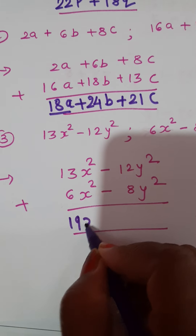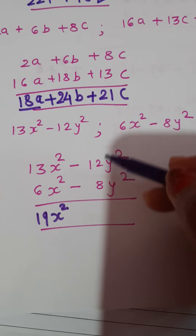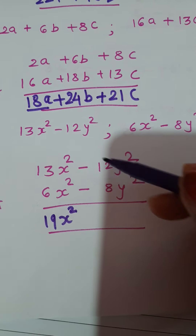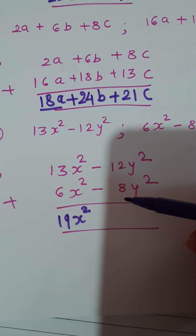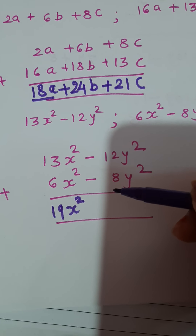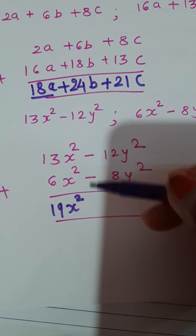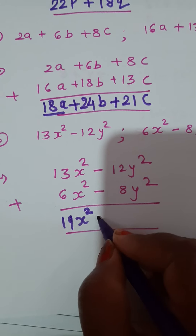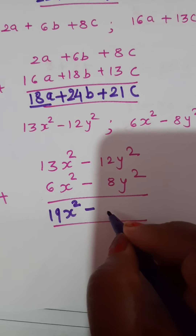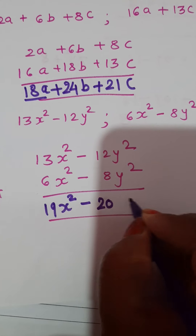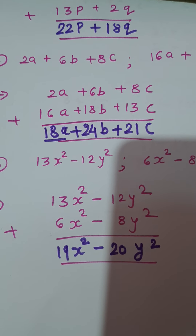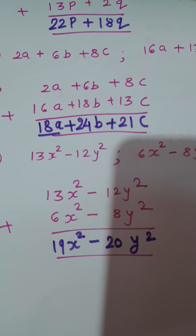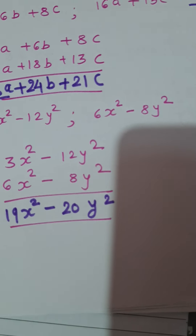Now look at the second term. Here both numbers are negative: negative 12 and negative 8. Using the rule — when both numbers are negative, add them and give the same sign — so negative 12 minus 8 gives negative 20, or minus 20. Both words mean the same. Understood the second rule of signs? When both numbers are negative, add them and give the same sign.